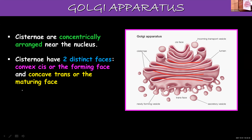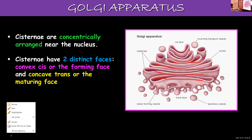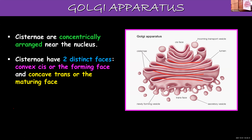Cisternae have two distinct faces. One face is the convex face — also called the cis face or forming face. The other side is concave — called the trans face or maturing face. Cis and trans are Latin words: cis means 'on this side' and trans means 'on the other side.' So forming face is cis and maturing face is trans.